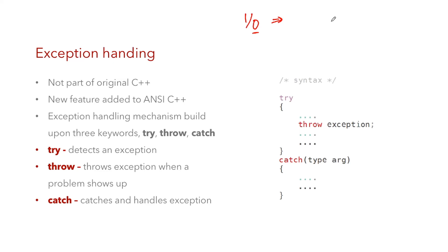Exception handling was technically not part of the original C++ library. It was a new feature added to C++ because when C++ gained popularity, most programmers wanted this functionality. There was huge demand for this feature, which is why it was introduced. The exception handling mechanism is built around three keywords: try, catch, and throw.